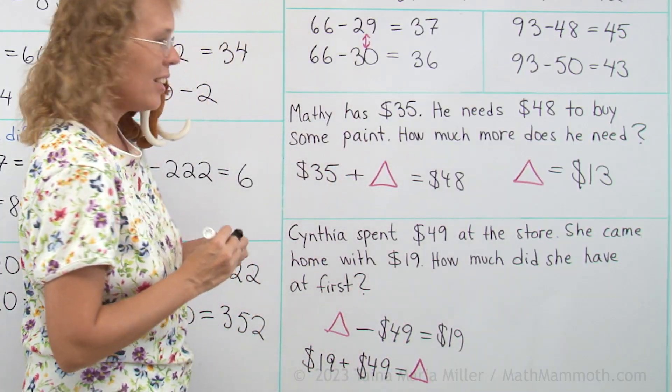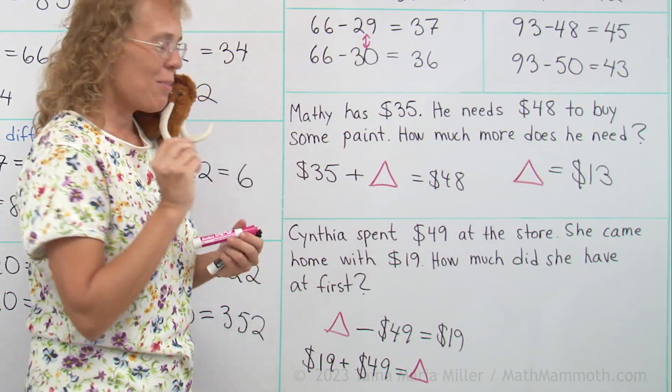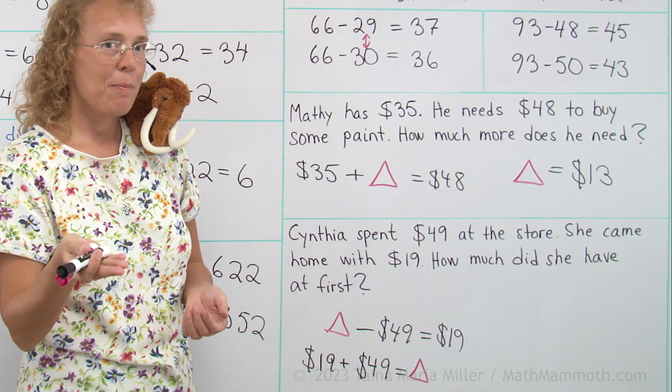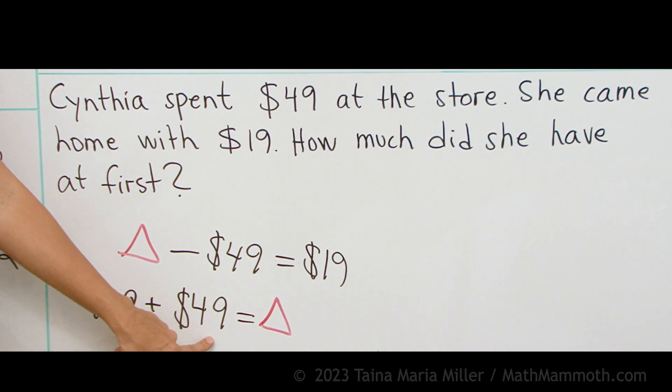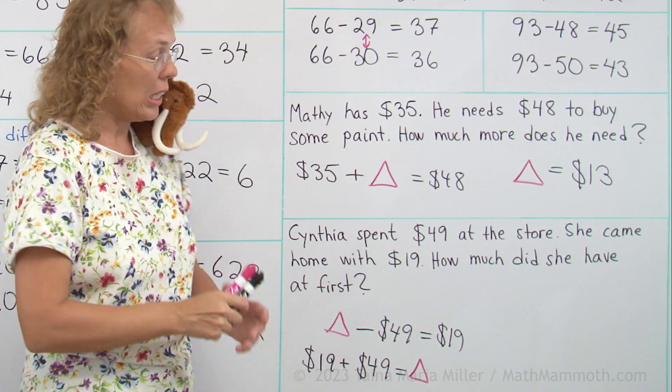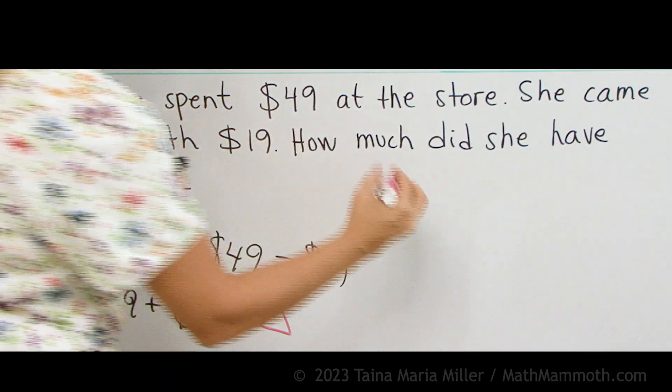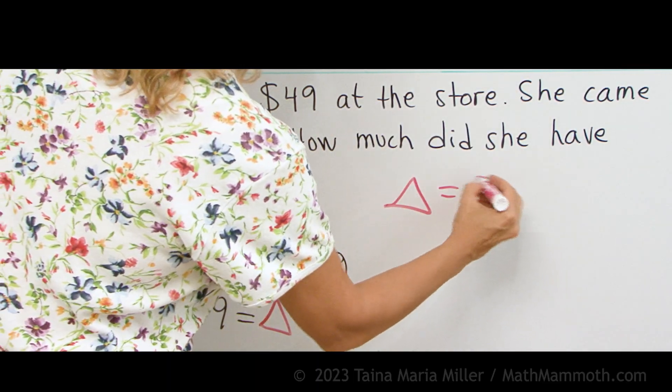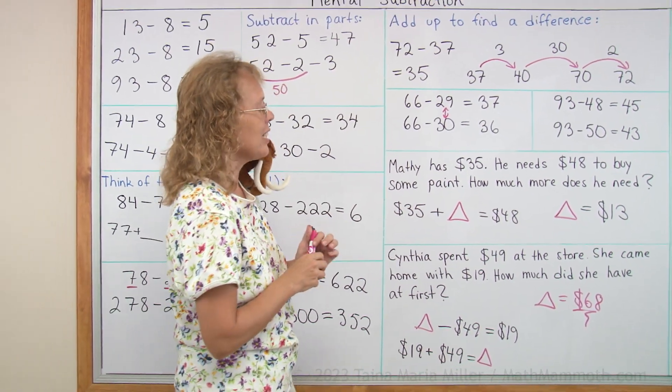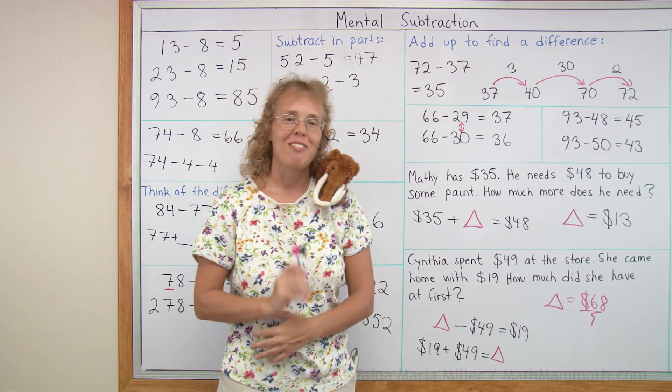Now let's add $19 and $49. And both of these, there's an easy number that is real close to 19 and there's an easy number that's real close to 49. And those are 20 and 50, right? 20 plus 50 is 70. But this is one dollar less, one dollar less. So the answer is two dollars less than 70, right? Or 68. So the triangle is $68. There. That's how much she had in the beginning. We're all done with this lesson.